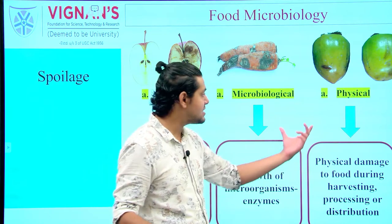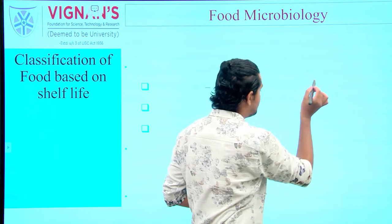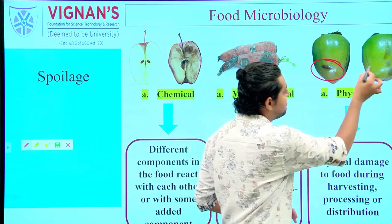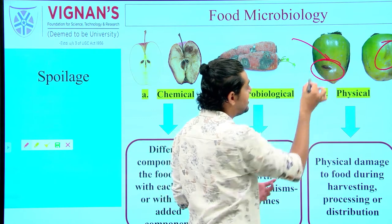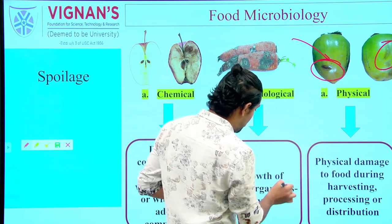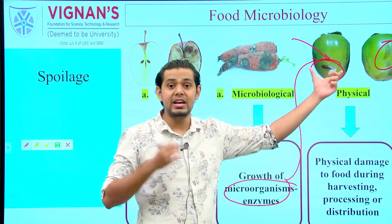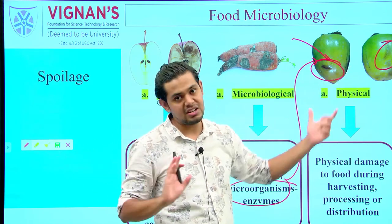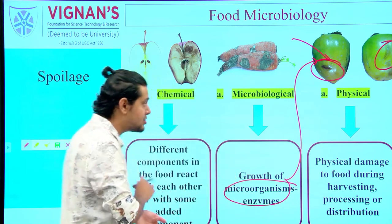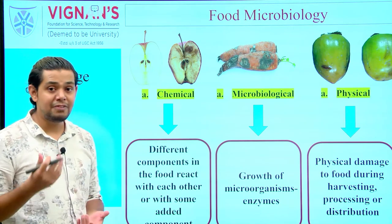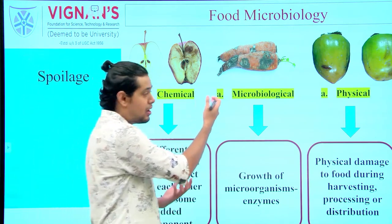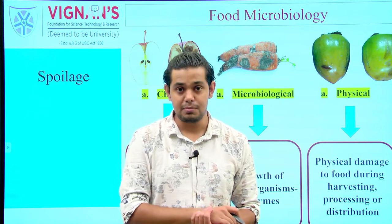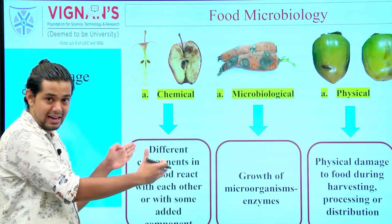If a fruit, vegetable, or any food product suffers physical damage or injury during any unit operation, it is classified as a physical change. Physical damage gives a way for microorganisms to enter — they seek shelter inside the food product and bring about all possible changes, rendering it spoiled. In overview, food spoilage involves chemical, microbiological, or physical changes that render the food product unfit for consumption.